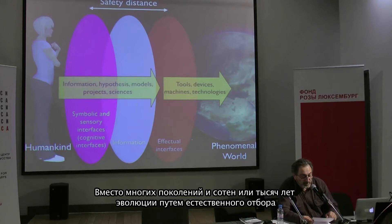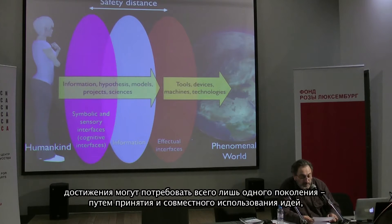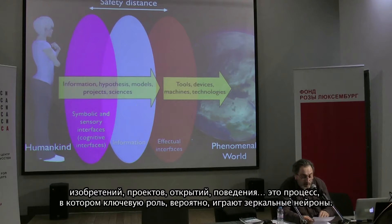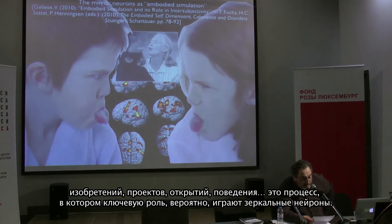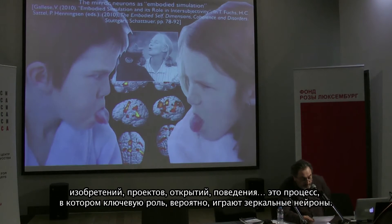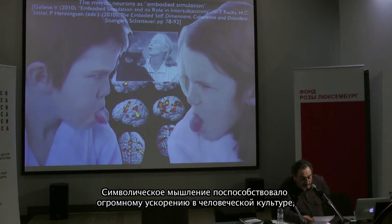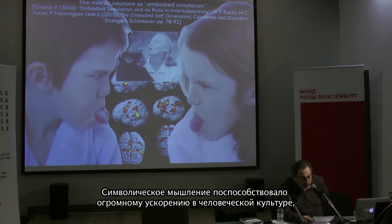Through symbols, humans have boosted the speed of cultural evolution, allowing our ancestors to reduce the adaptation time to the environment, limiting or shifting its pressure. Instead of many generations and hundreds of thousands of years of evolution through natural selection, achievement can require just one generation, by adopting and sharing ideas, inventions, projects, discoveries, behaviors — in a process where a key role was probably played by mirror neurons. Symbolic ability generated a huge acceleration in human culture, which is evident in particular in the communication realm.